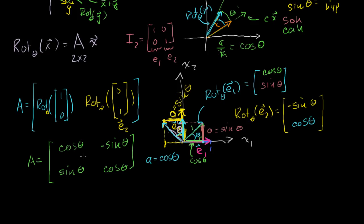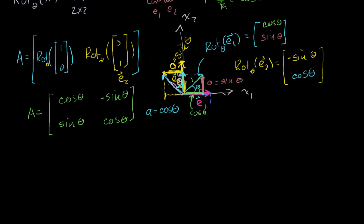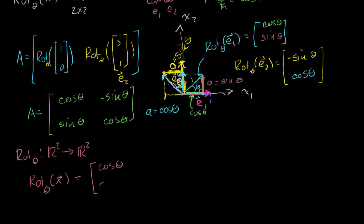This is a big result. We've now mathematically specified our rotation transformation using a matrix. The rotation transformation from R2 to R2 through angle theta of any vector x equals the matrix [cosine theta, minus sine theta; sine theta, cosine theta] times the vector (x1, x2).